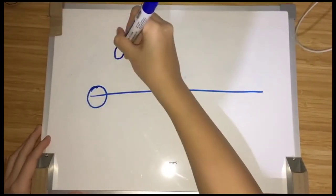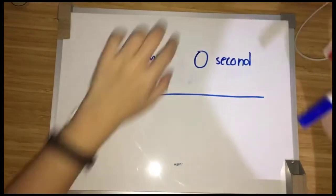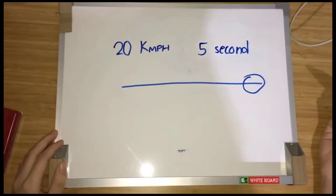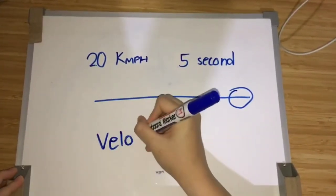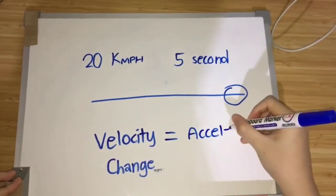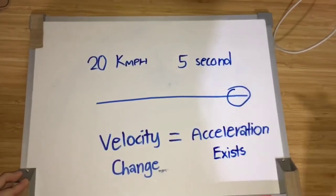What about an object moving from 0 km per hour to 20 km per hour in 5 seconds? Does that mean the object is accelerating? The answer is yes, because the velocity is changing. It was initially 0 but it got to 20 km per hour in 5 seconds.